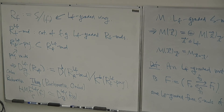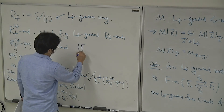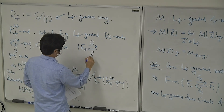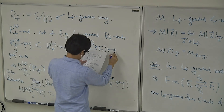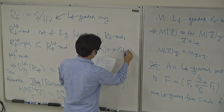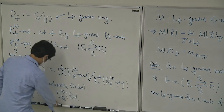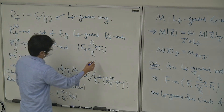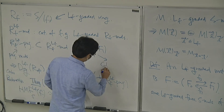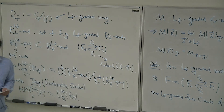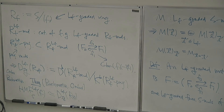The functor is explicit: given a matrix factorization (F_0, F_1), I take the cokernel of F_1. This gives one way to describe the category.